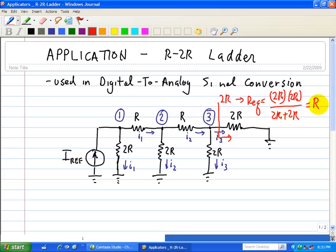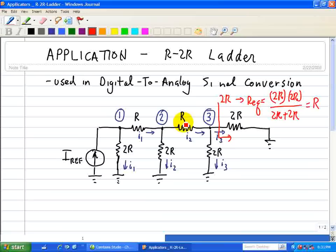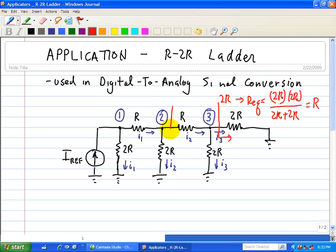So the R equivalent, looking through here, when we see 2R connected in parallel with this 2R is simply R. But we note that this resistor R is in series with this R where the current is going through I2. So R plus R, what we see again here, is 2R.